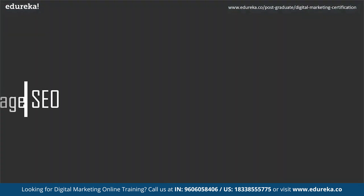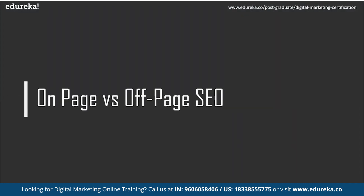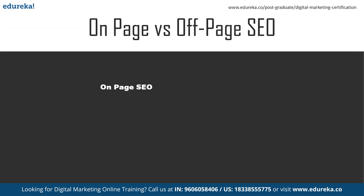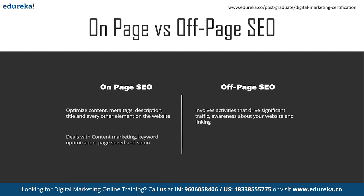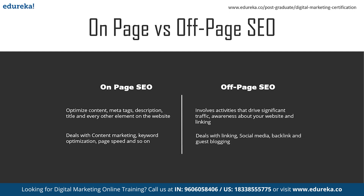Let's take a look at the difference between on-page and off-page SEO. On-page SEO involves optimizing your content, meta tags, description, title, and every other element present on the website. Whereas off-page SEO involves activities that drive more significant traffic, create awareness about your website, and involve linking. On-page SEO often deals with content marketing, keyword optimization, and page speed, whereas off-page SEO deals with linking, social media, backlinks, and guest blogging.